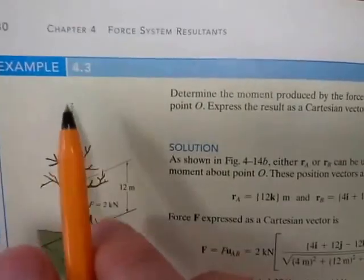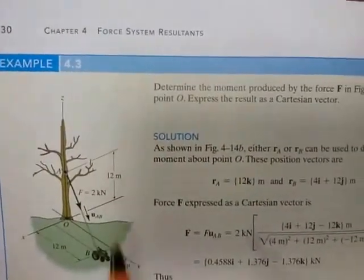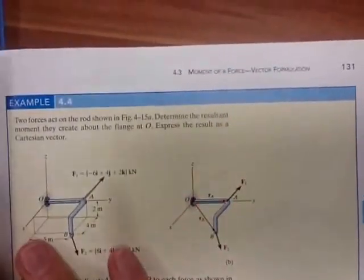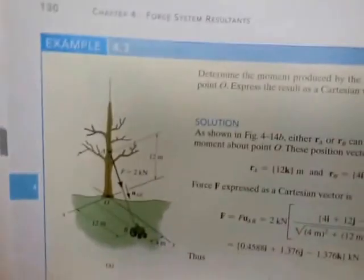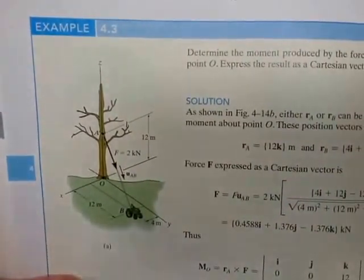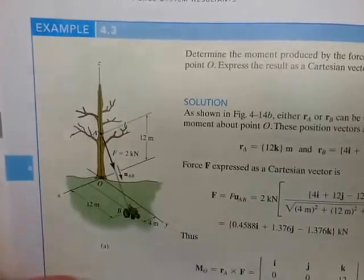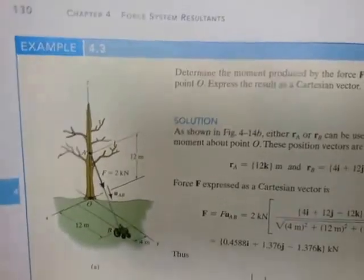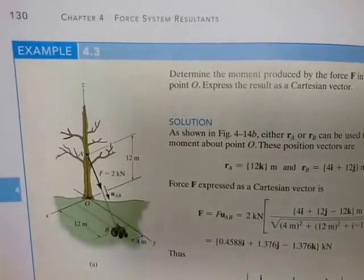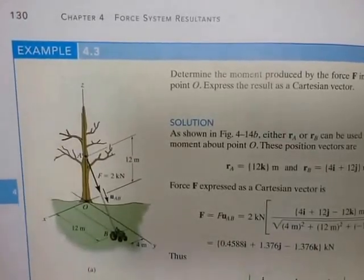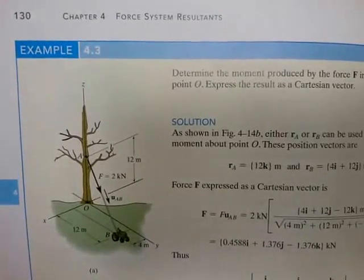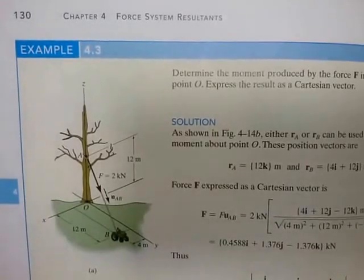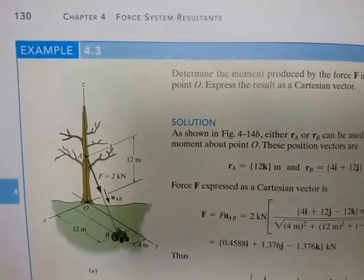We're going to look at example 4.3. We're in chapter 4 on force system resultants, looking at moment of a force vector formulation. Why use vector formulation? Because we are in three-dimensional space. In two-dimensional space we can use the scalar formulation, but in three-dimensional space it is so much easier — and perhaps only possible — to solve these problems using vector formulation.